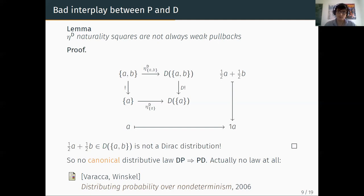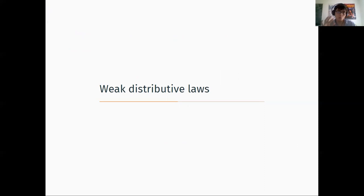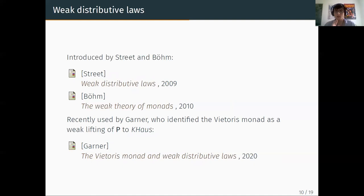How do we escape from this dead end? The idea is to use a weaker framework called weak distributive laws. These are not very well known. Weak distributive laws were introduced by Street and Böhm, and recently reintroduced by Garner, who simplified the framework considerably and proved in his paper that one can identify the Vietoris monad in the category of compact Hausdorff spaces as a weak lifting of the power set monad. Our idea is to use Garner's framework.